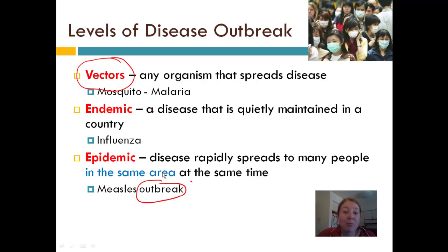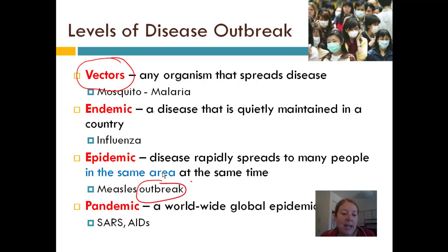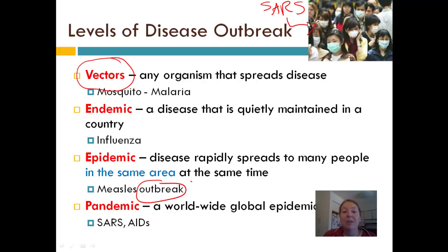A pandemic is the same as an epidemic but expanded to a global scale — such as AIDS. This picture was taken when the SARS pandemic was spreading around the world. Because our society is so global with people flying everywhere, people wore masks to prevent the spread of a respiratory pathogen such as SARS.